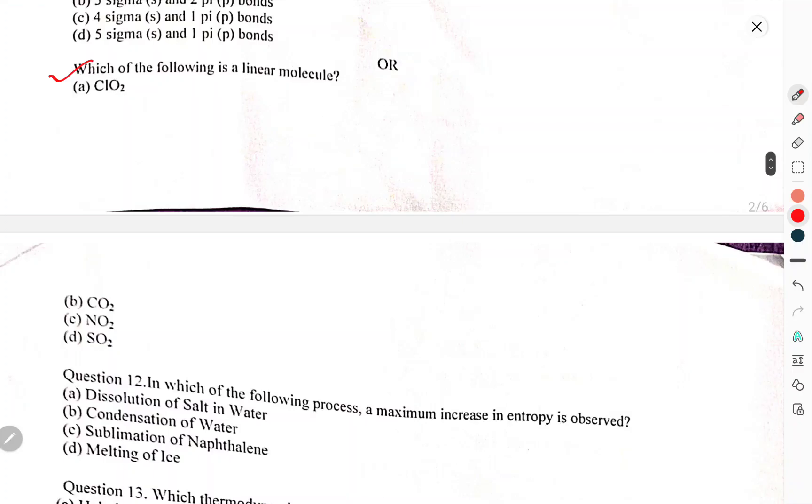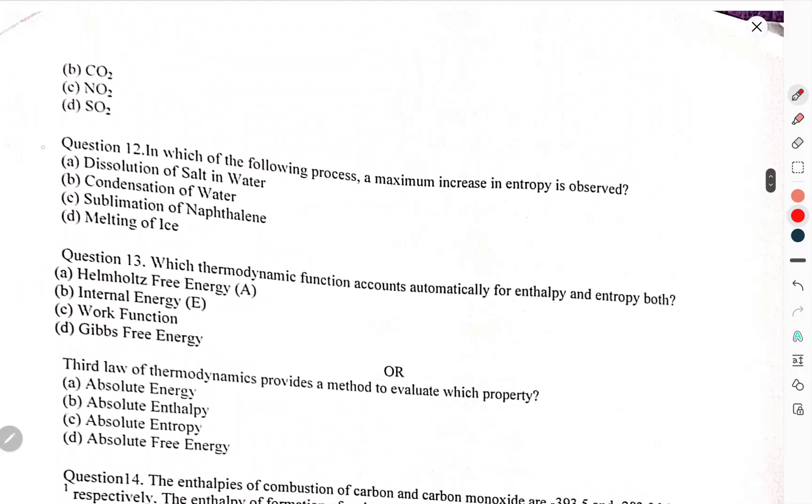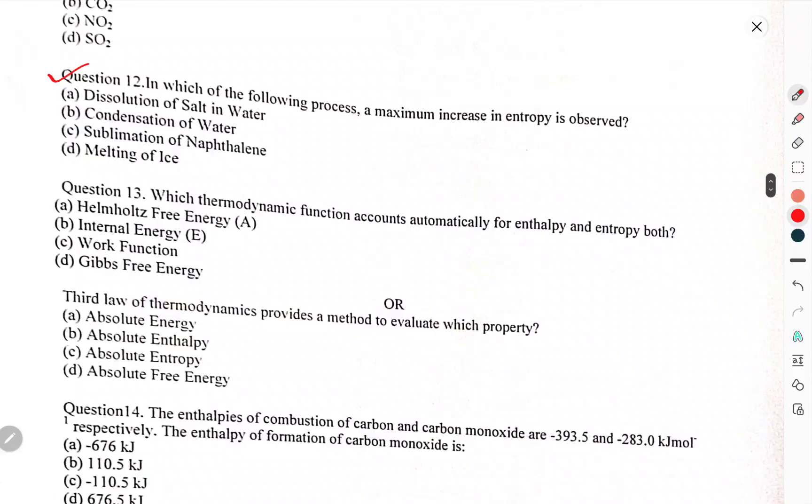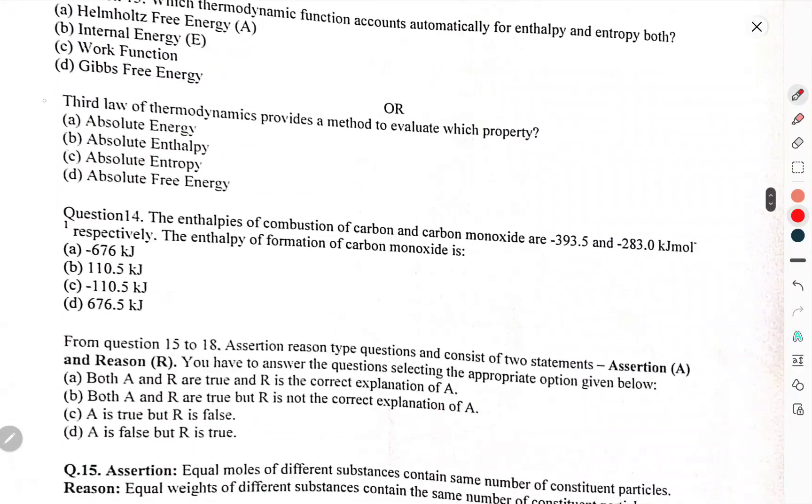Which of the following is a linear molecule? In which of the following process is a maximum increase in entropy observed? Which thermodynamic function accounts automatically for enthalpy and entropy both? Or, third law of thermodynamics provides the method of determining which property? Question 14: Given the enthalpies of combustion of carbon and carbon monoxide are 393.5 and 283 kilojoule per mole respectively, the enthalpy of formation of carbon monoxide is?